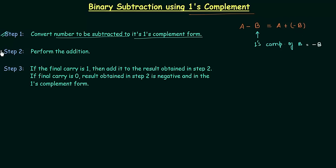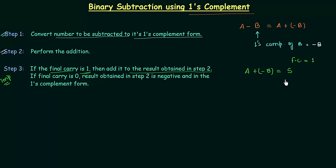So we have minus of b, and in step number two we have to perform the addition — we add minus of b with a. Then we move to step number three, which is the most important step. In this step we focus on the final carry. If the final carry is equal to one, we have to add this one to the result obtained in step number two. This adding of the final carry is known as end-around carry, and this is very important.